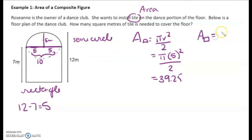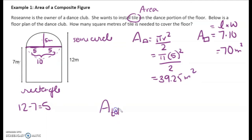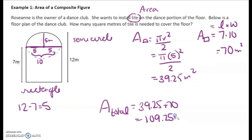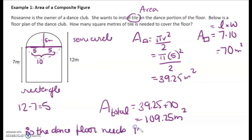Now let's find the area of the rectangle: length × width = 7 × 10 = 70 meters squared. The total area is 39.27 + 70 = 109.27 meters squared. This is a word problem, so let's write a therefore statement: Therefore, the dance floor needs 109.25 meters squared of flooring.